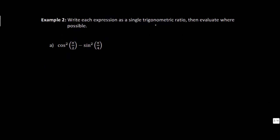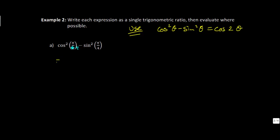Example 2 says write each expression as a single trigonometric ratio and then evaluate where possible. Note: there's a small typo — both angles should be pi over 4. We're trying to write this as a single trig ratio. We have the identity that cosine squared θ minus sine squared θ equals cosine 2θ. So we write cosine of 2θ where theta is pi over 4, giving us cosine of 2 times pi over 4, which simplifies to cosine of pi over 2.